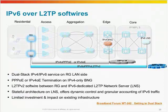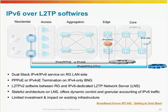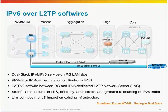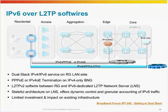In the IPv6 over L2TP softwires technique, you have the same residential access, aggregation, edge, and core network structure. The residential gateway is still doing IPv4 over PPPoE going towards the IPv4 BNG, which provides all layer 3 services. What you do here is drop an IPv6 LNS — an L2TP Network Server — in your core network. You bring all your v6 traffic from your dual-stack RG and terminate it on the IPv6 LNS, which sends it to the IPv6 Internet. This is a very limited investment that can provide IPv6 services to your customers simply by dropping this IPv6 LNS in your core network and making your RG a dual-stack device.